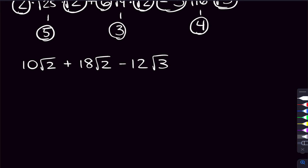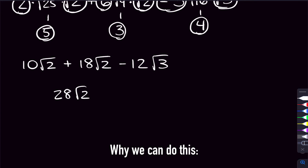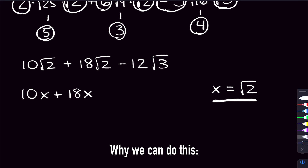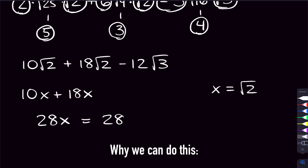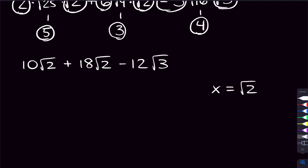Now we just have to combine like terms. If we have two numbers that have the same square root, they can be added together. If we let x equal rad 2, then we have 10x plus 18x, which is 28x — and since x is rad 2, that's 28 rad 2. The rad 3 is not a rad 2, so we can't combine that — it stays on the outside. Our final answer is 28 rad 2 minus 12 rad 3.